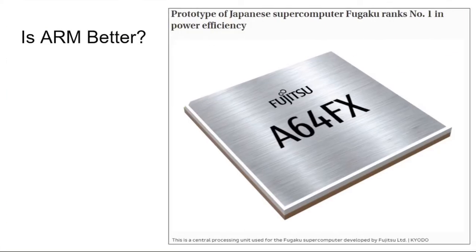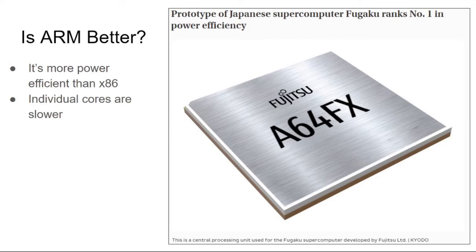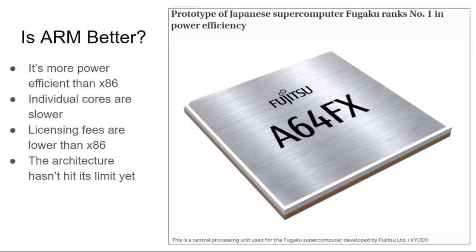So ARM is good then? Well, maybe. It's more power efficient than x86, though at the moment the cores are also individually slower. Licensing fees are lower compared to x86, though as a reminder, RISC-V doesn't have any licensing fees to deal with, and the RISC-V architecture has similar benefits to ARM. Of course, ARM has not fully matured yet. The platform still has room to improve and eventually catch up to x86 on a per-core basis, and as ARM processors make their way into mainstream consumer products, the rise in supercomputing should soon follow.